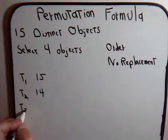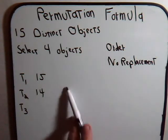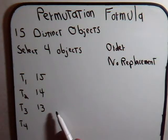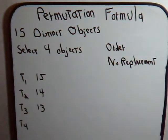And for task T3 to select our third object, two objects now have already been selected. So now we have 13 objects to choose from. So there's 13 different ways that we can do task number 3. And for task number 4, now 3 objects have already been chosen from the 15. They're gone. That leaves 12 remaining objects. So there's 12 different ways that we can perform task T4.